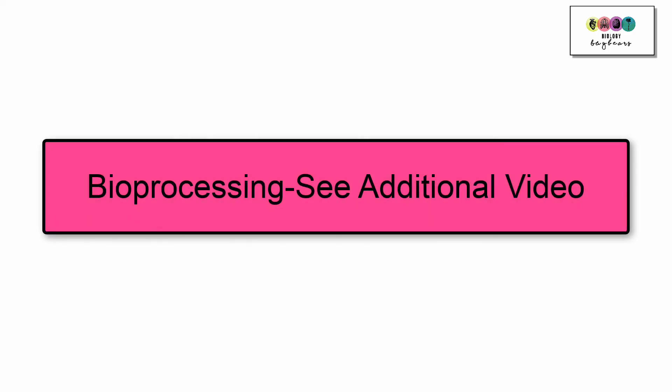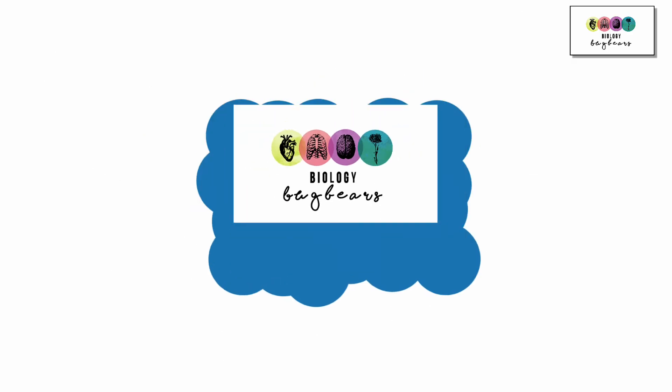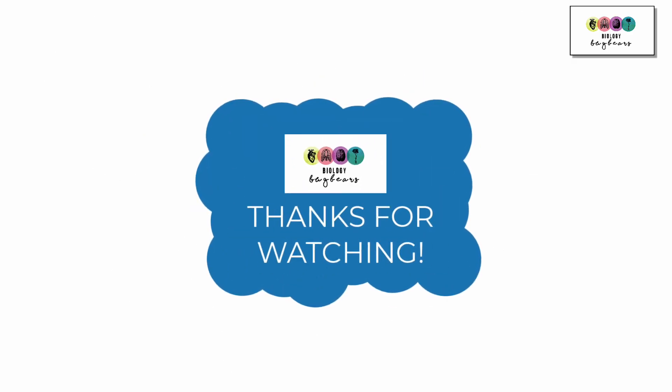So please note that bioprocessing is an additional section of this chapter. It's really important that you don't forget about it and that you can label a bioreactor so see the additional video. Best of luck. So at this stage you know how important it is to always use your textbook to do past papers and check the marking scheme.